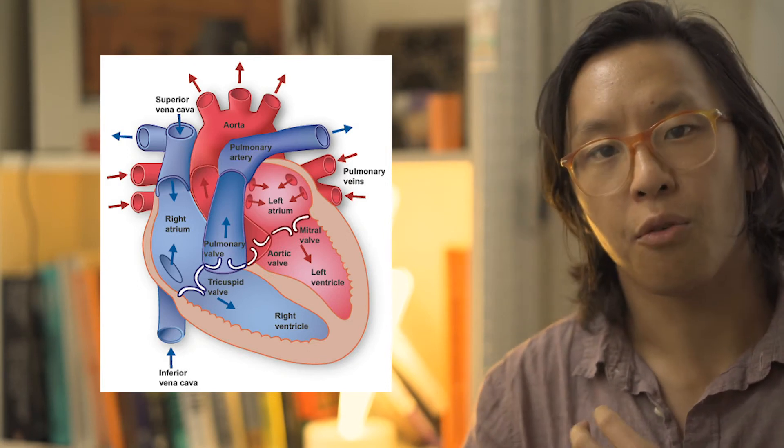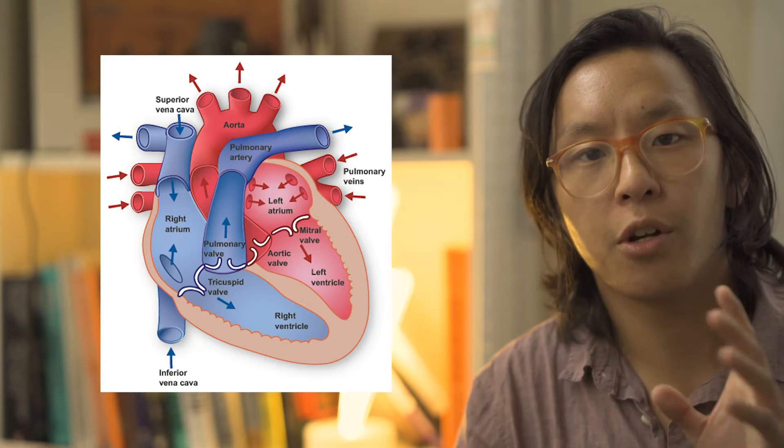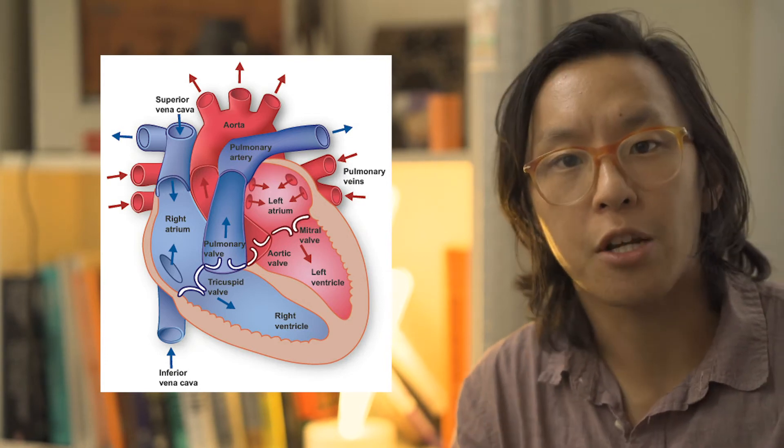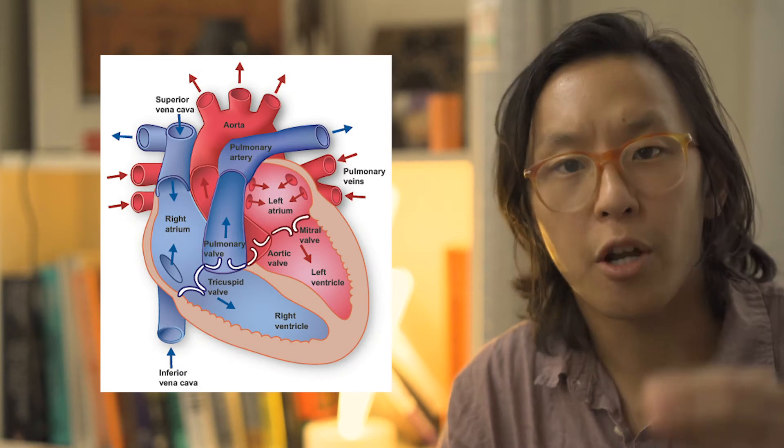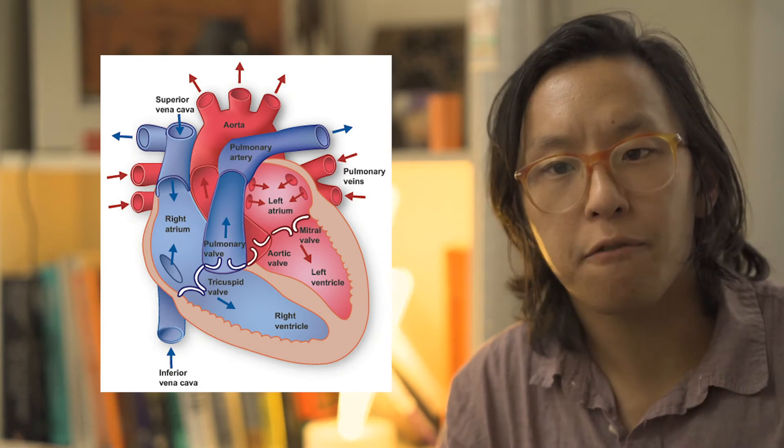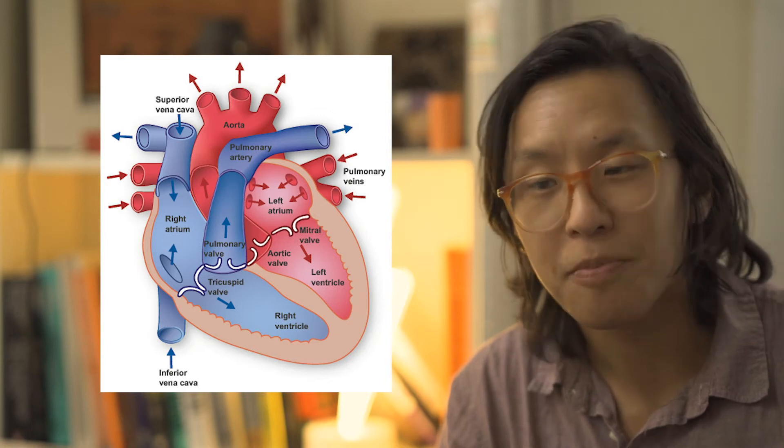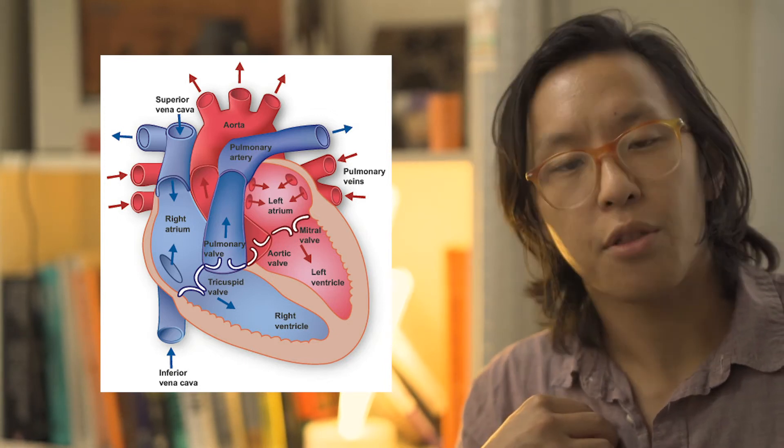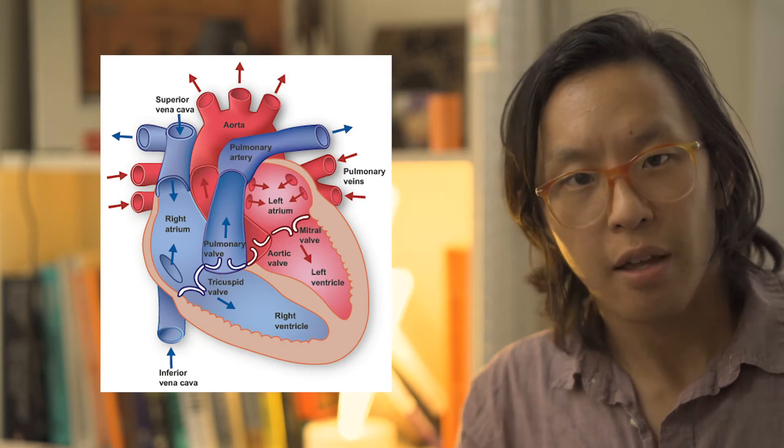It's going to start in the right atrium. When you're describing anatomy on a piece of paper or on a patient, we're looking at it from their perspective, so your left is their right. It's going to go in the right atrium and then through the tricuspid valve.